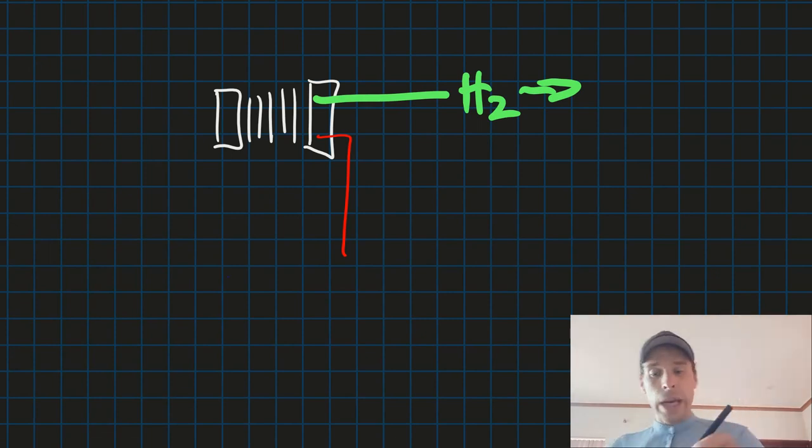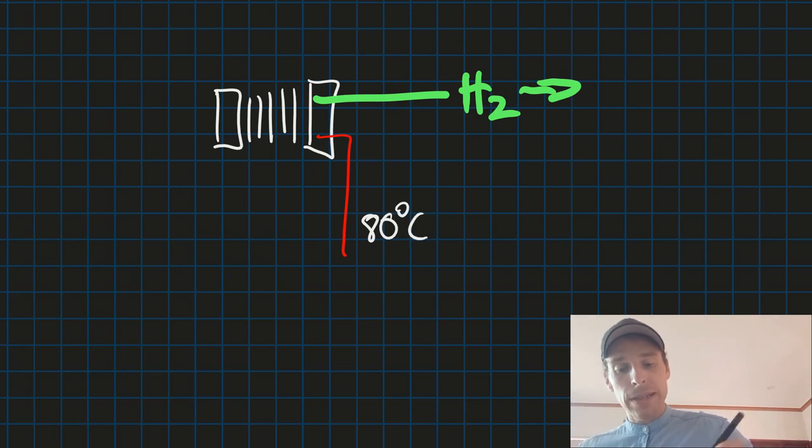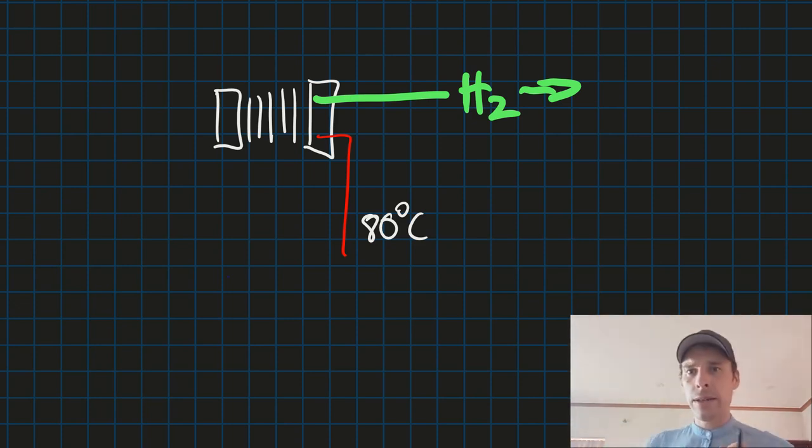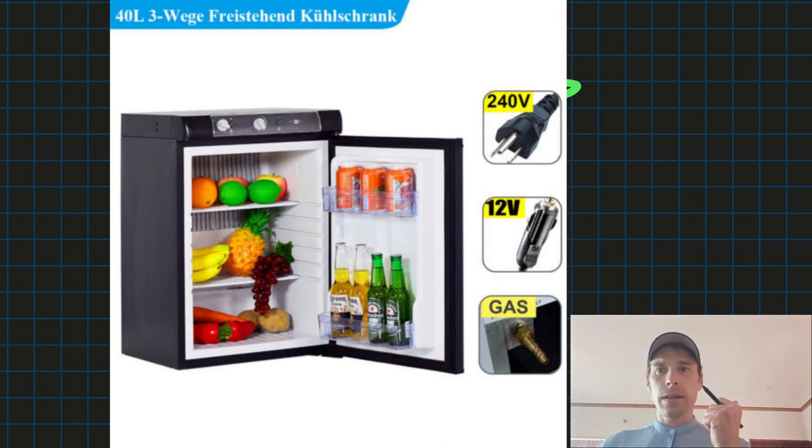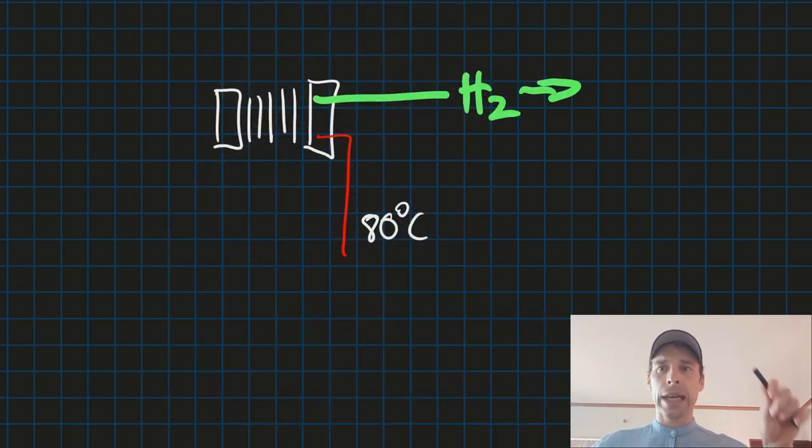So we have this waste heat. PEM electrolyzer works at 80 degrees centigrade. You might have heard of absorption refrigerators in the camping sector. There are these domestic absorption refrigerators which you can power by propane gas or electricity. Sometimes it's useful when you're camping.